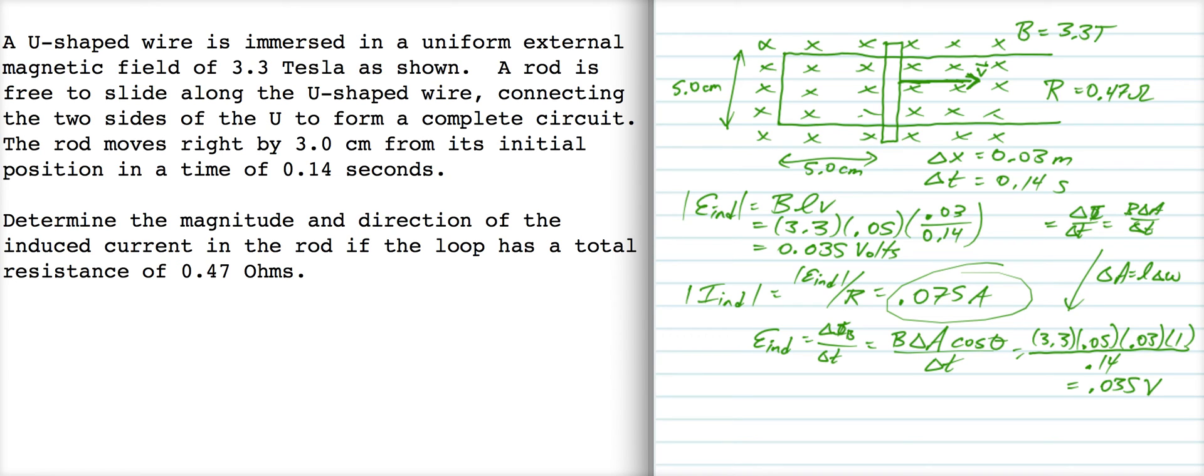Anyway, now for the direction of the current. The magnetic flux is into the page, that's the direction of the external field, and it's increasing. As the rod moves to the right, the number of x's in the loop is going to get bigger, it's going to incorporate these x's into it, so that's increasing. That means that the induced magnetic field is going to try to oppose that change, and it's going to point out of the page.